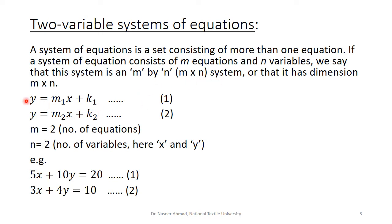For example, y equals m1·x plus k1 is the first equation and y equals m2·x plus k2 is the second equation. In this system, there are two equations so m equals 2, and there are two variables x and y so n equals 2. A numerical example: 5x plus 10y equals 10 is the first equation, and 3x plus 4y equals 10 is the second.